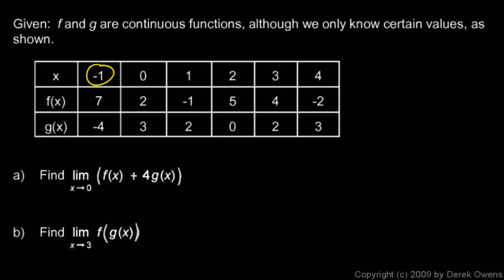And then we're told to find, in this case, the first question, the limit as x approaches 0 of f of x plus 4 g of x. Well, this is a continuous function, so as x gets close to 0, then the value of the function will get close to f of 0. And we can see here f of 0 in the table is 2. So this is 2 right here.